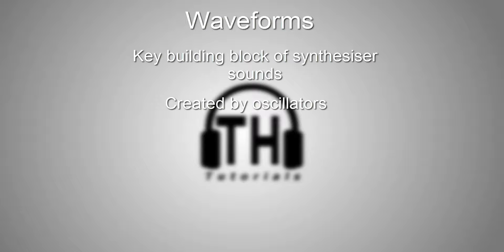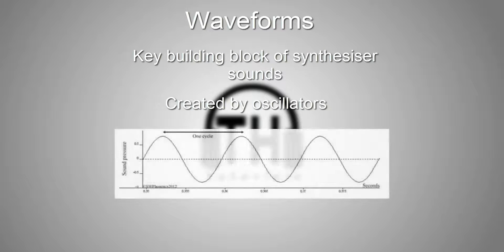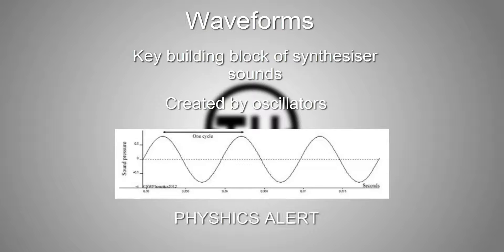A waveform is created by an oscillator. In this diagram we can see a sine wave. The vertical axis represents the sound pressure, and the horizontal axis represents time. The physics behind this is quite complicated, and if you want to read more and go in depth, you can find a link in the description with more information. I'm going to purely focus on how this sounds and what these waveforms mean for our sound.